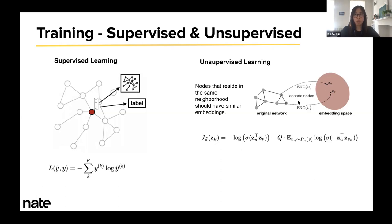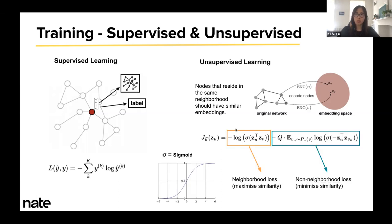You could achieve this by minimizing this loss. J_ZU defines the loss at node U. V is a neighbor of U. PN_U is the negative sampling for U, so it's a sample of nodes that are not in U's neighborhood. You could break this loss into two parts. By minimizing the first part of the loss, you maximize the similarity, the inner product, between the embedding of U and the embedding of V. Similarly, the second part: by minimizing the second part of the loss, you minimize the similarity between ZU and this independent node.